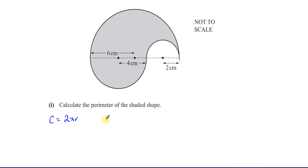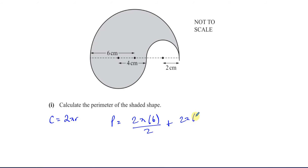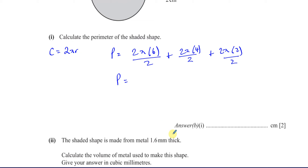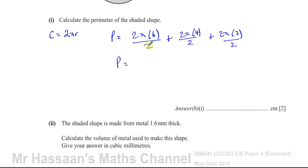Circumference is 2 times pi times r. We're looking for half the circumference in each case. So the total perimeter — starting with the big circle — is 2 times pi times 6, divided by 2. That gives you the arc length all the way around. Then you add 2 times pi times 4, divided by 2, for the medium semicircle. And then 2 times pi times 2, divided by 2 for the small one. The 2s cancel, so you've got 6π plus 4π plus 2π, which is 12π.